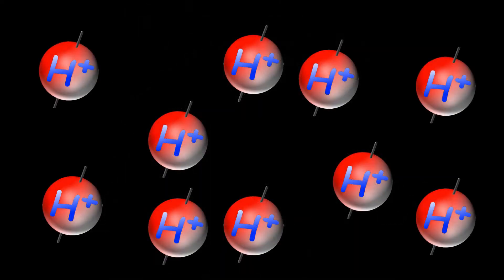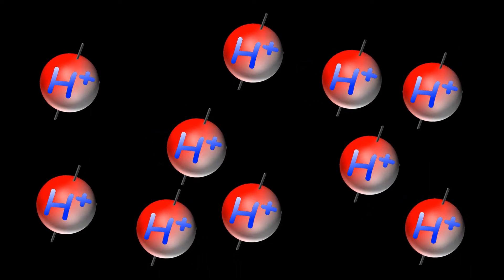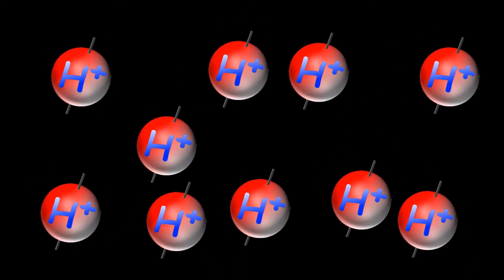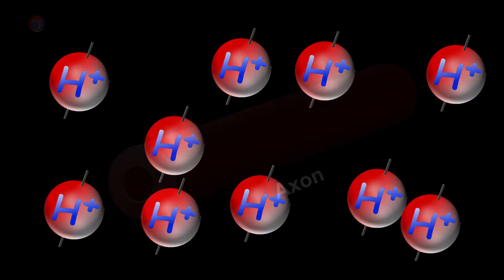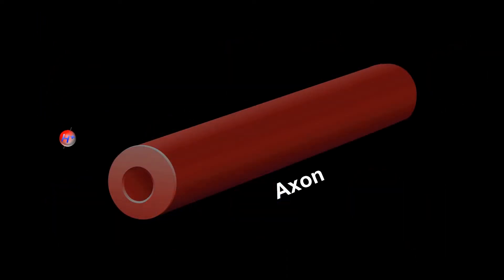Importantly, hydrogen atoms don't stand still but are constantly moving around. But they cannot just go anywhere they want. For example, within white matter, hydrogen atoms mostly move along the direction of the axon, similar to water moving through a straw.